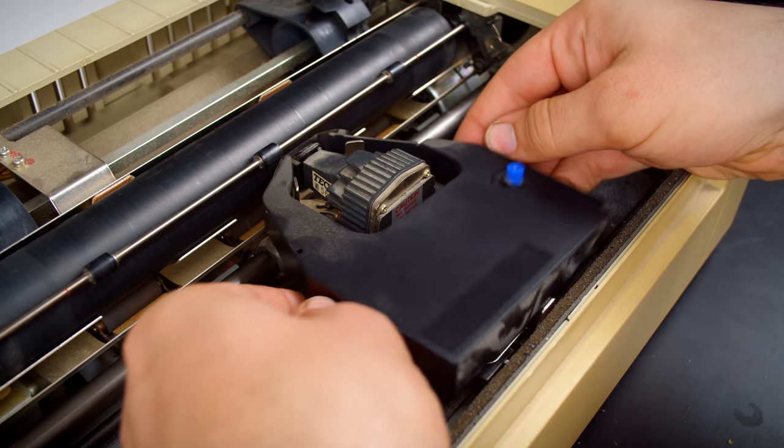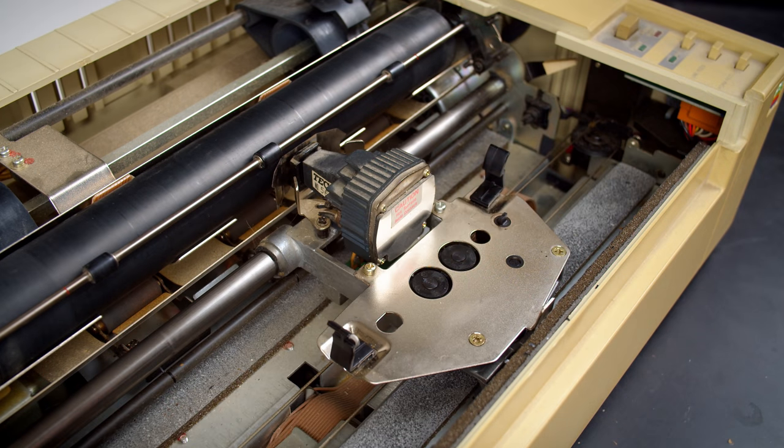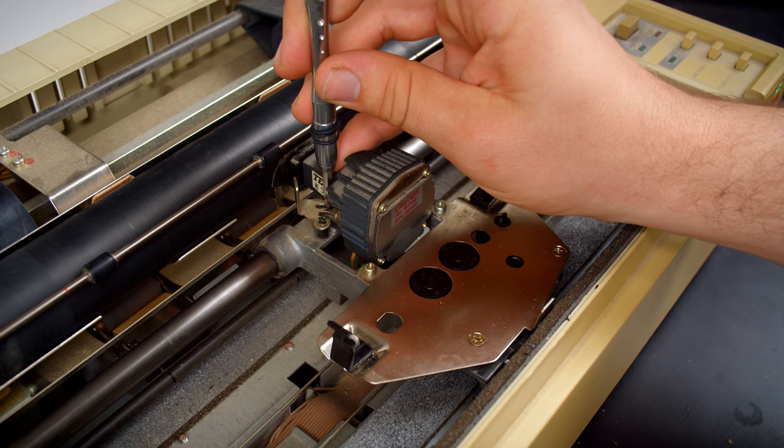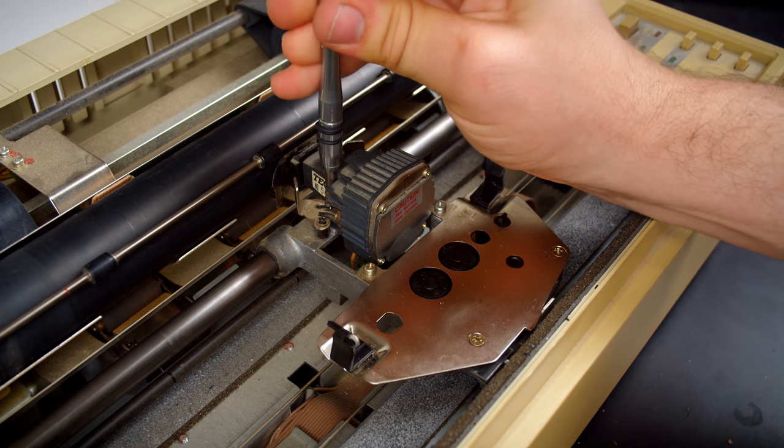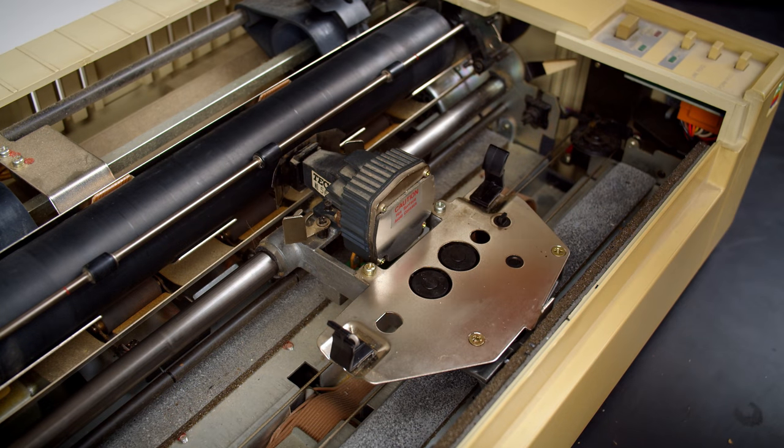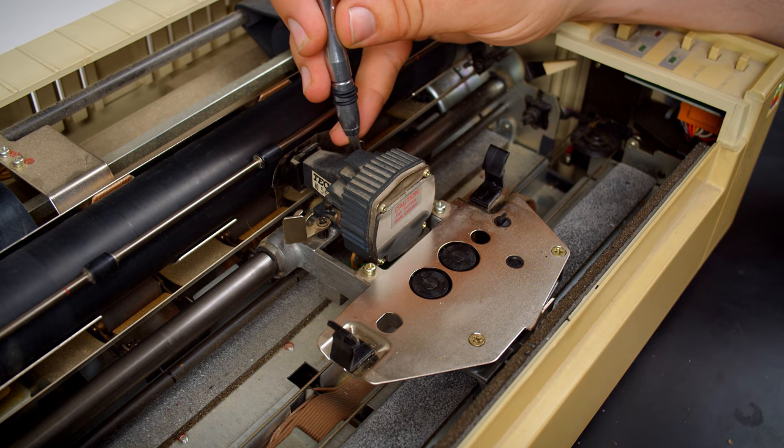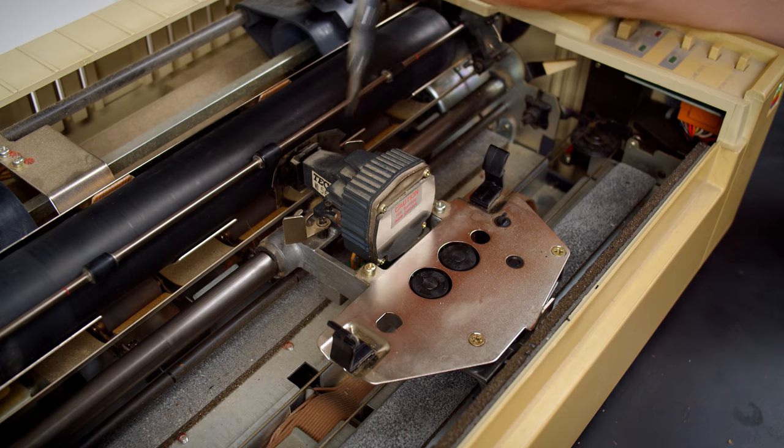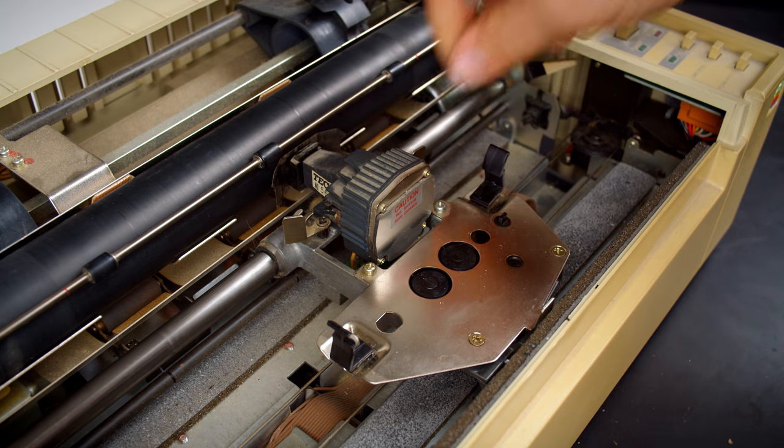Dot matrix printers were popular when maintenance and serviceability was a key feature people were looking for, and all of the dot matrix printers I have that I've checked have easily removable print heads. The Apple ImageWriter here is very easy. All you have to do is loosen two screws to loosen the ribbon guides and then pull the head out while making sure the paper bail isn't in the way.